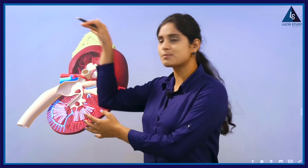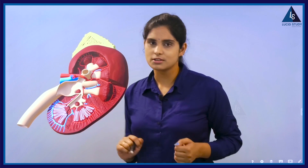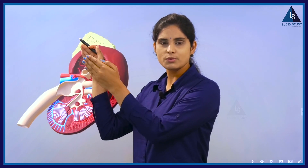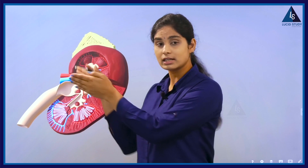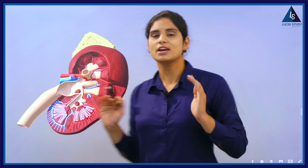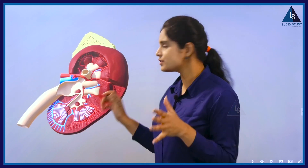Why? Because of the presence of the liver at the top. Due to the presence of liver above the right kidney, the right kidney is placed just lower when compared to the left kidney. That is the basic location and feature.